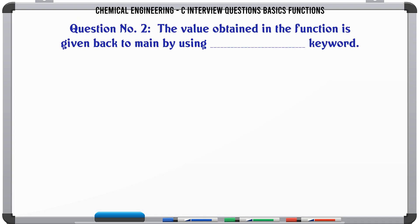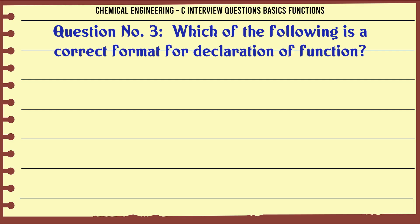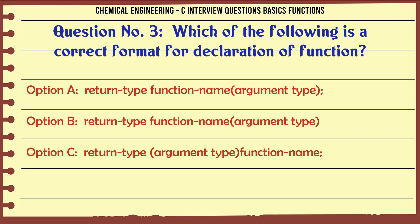Question 2: The value obtained in the function is given back to main by using keyword - Option A: return; Option B: static; Option C: new; Option D: volatile. The correct answer is return. Question 3: Which of the following is a correct format for declaration of function?